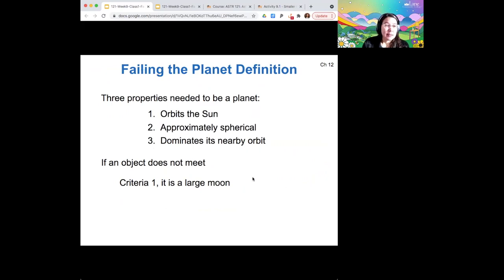And instead, if it's not a planet, then based on which criteria it fails, it's classified as something else. So if an object doesn't orbit the sun, then it must be orbiting a planet, and so then it would be a moon. If it doesn't satisfy criteria number three, if it doesn't dominate its nearby orbit, then that's what classifies it as a dwarf planet.